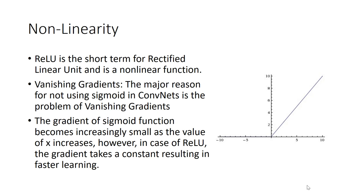Now the second layer is non-linearity layer. In our traditional neural networks, we use sigmoid function as the non-linearity function. But sigmoid functions have a vanishing gradient problem. So we will use RELU which is short for rectified linear unit, and it is also a non-linear function. In the case of RELU, the gradient takes up a constant value which results in faster learning.